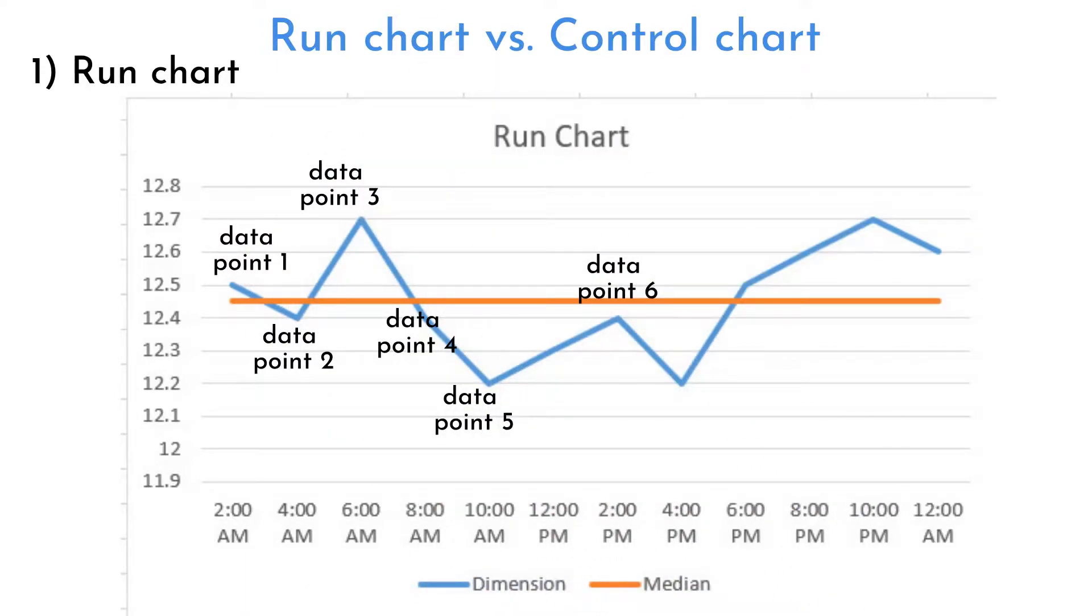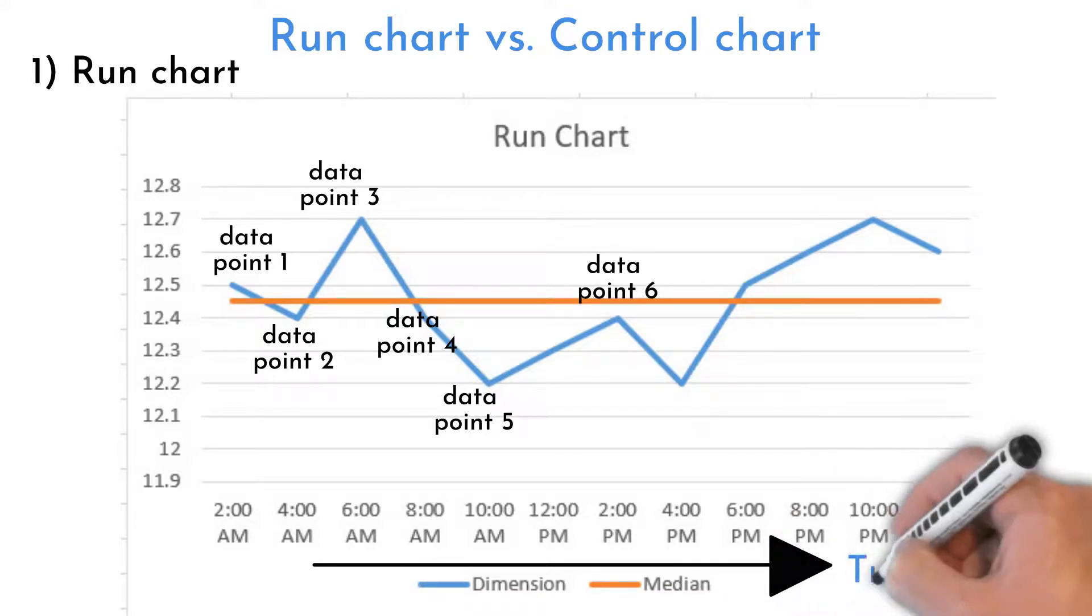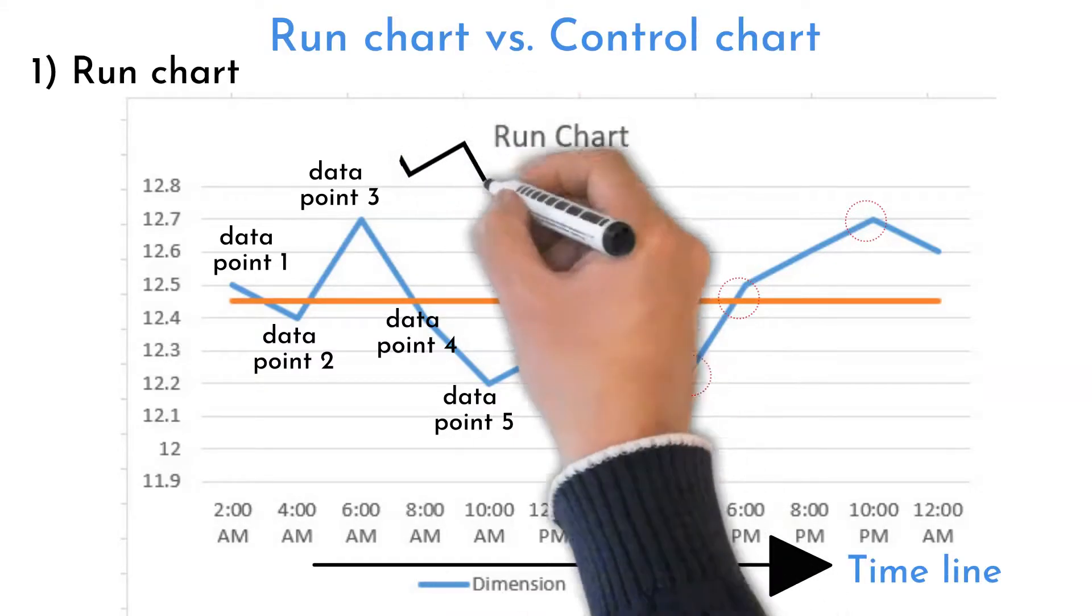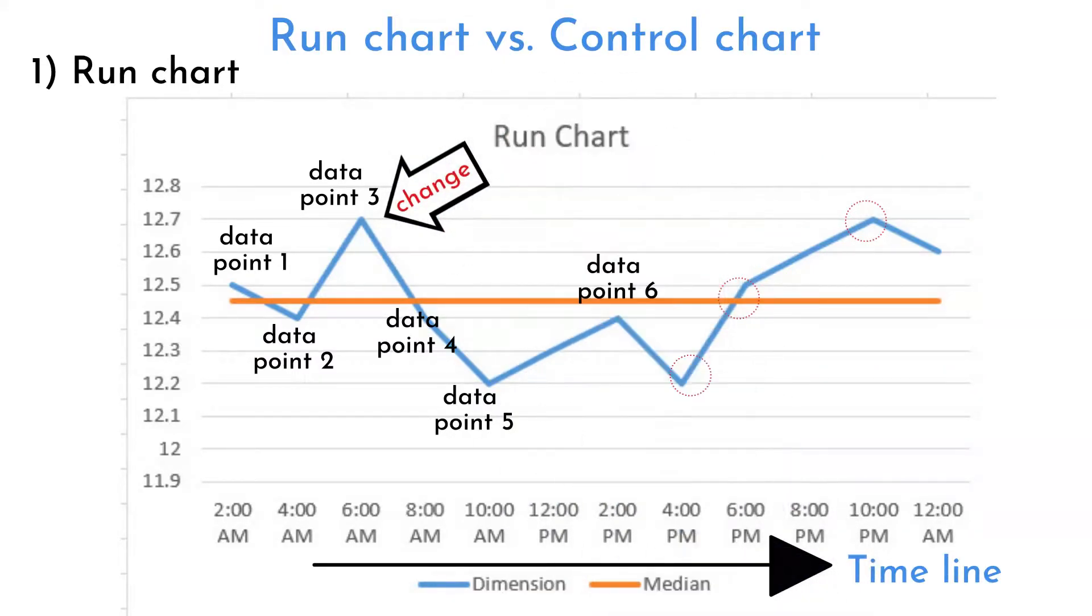This graph allows us to monitor process behavior over time, find trends or patterns in the monitored process, understand if changes made are really resulting in improvement, or if they are sustained.